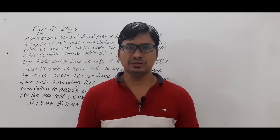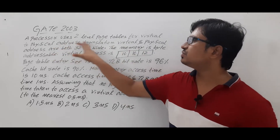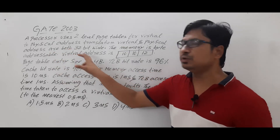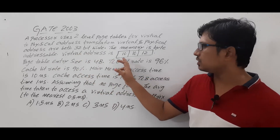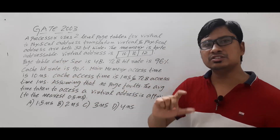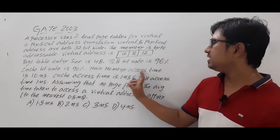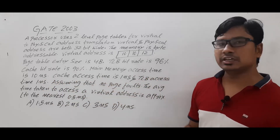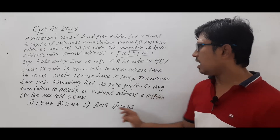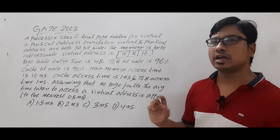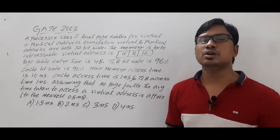First let me read out the question, then I will discuss the solution with you. A processor uses two-level page tables for virtual to physical address translation. Virtual and physical addresses are both 32-bit wide. The memory is byte addressable. The virtual address is 32-bit, segregated into 10 bits, 10 bits, and 12 bits. Page table entry size is 4 bytes, TLB hit rate is 96%, cache memory hit rate is 90%, main memory access time is 10 nanoseconds, cache memory access time is 1 nanosecond, and TLB access time is 1 nanosecond. Assuming no page faults occur, the average time taken to access a virtual address is approximately — to the nearest 0.5 nanoseconds — with four options given.